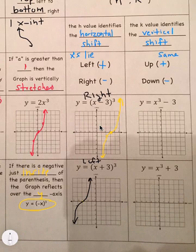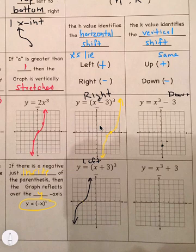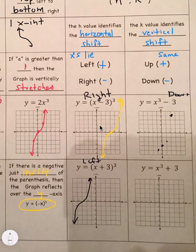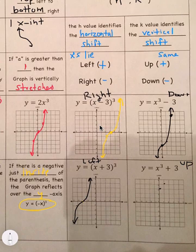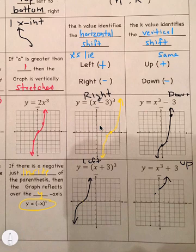For x cubed minus 3, the graph shifts 3 down, starting at (0, negative 3). Moving 1 to the right goes 1 up, and 1 to the left goes 1 down. When x is 2, 2 cubed is 8, minus 3 is 5, so we can plot that point. For x cubed plus 3, the graph shifts up 3, starting at (0, 3). Moving left, plugging in negative 2: negative 2 cubed is negative 8, plus 3 is negative 5. The h and k show where the inflection point moves.